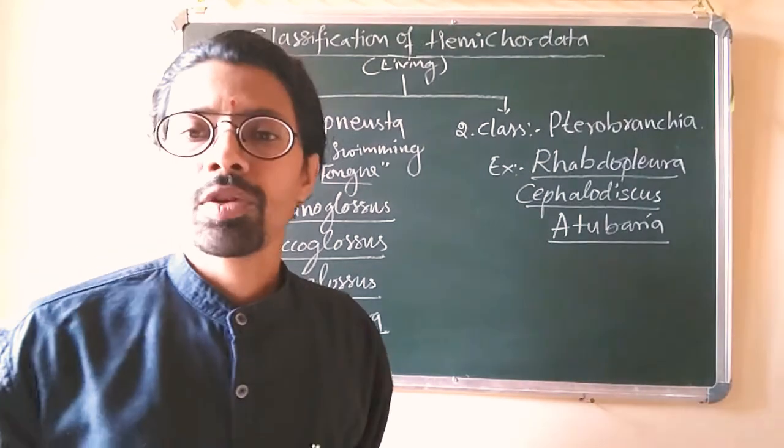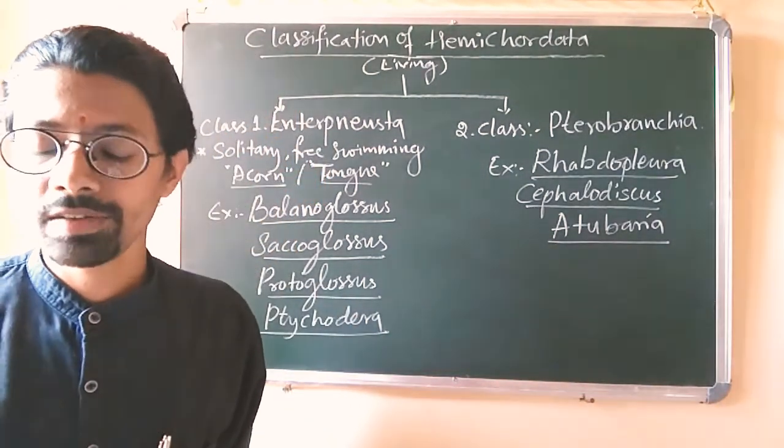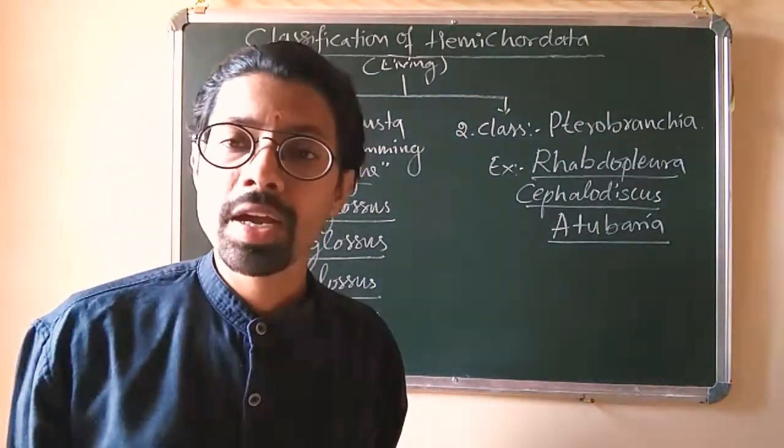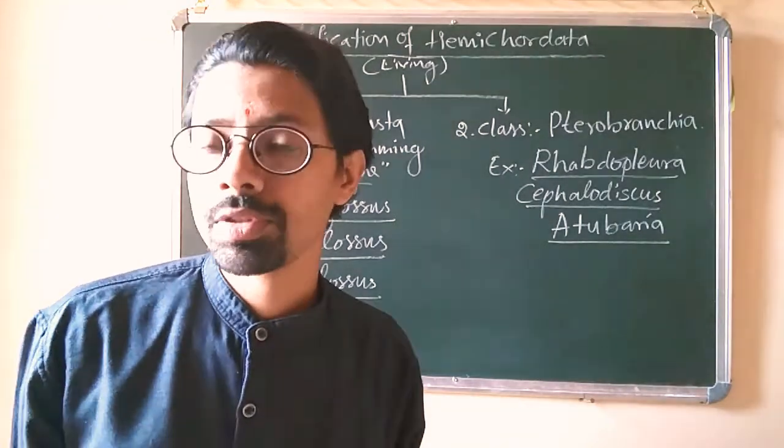If you talk about the word Pterobranchia, Ptero means feather and Brachion refers to gills. So feather-like gills are present in them, so it's called Pterobranchia.